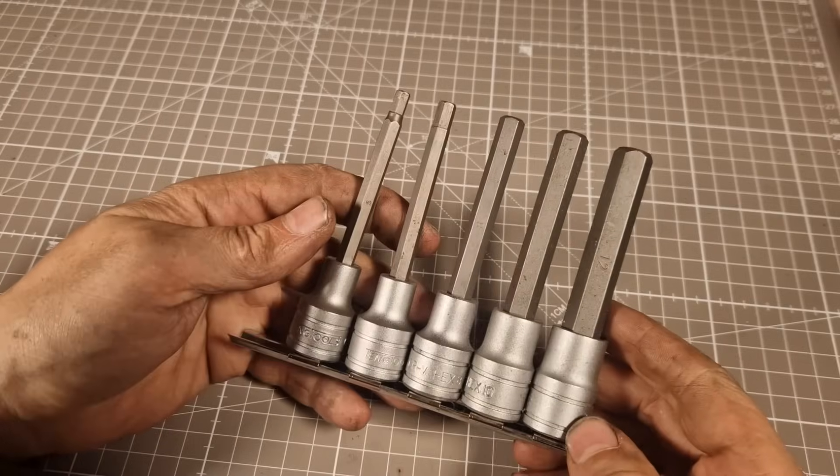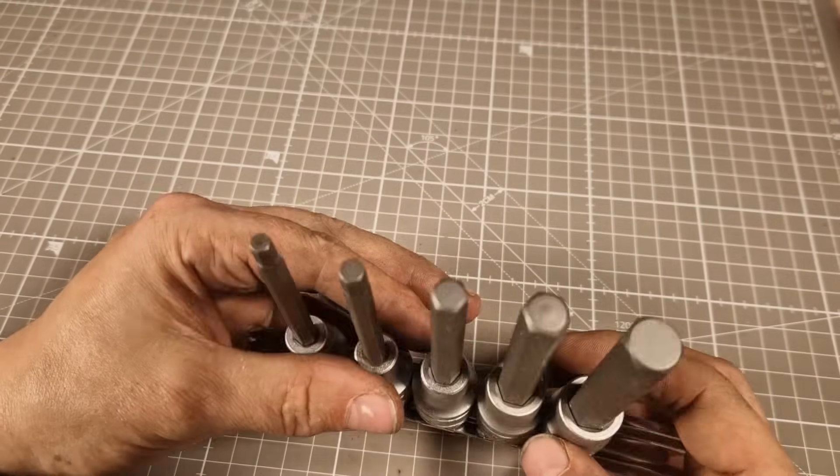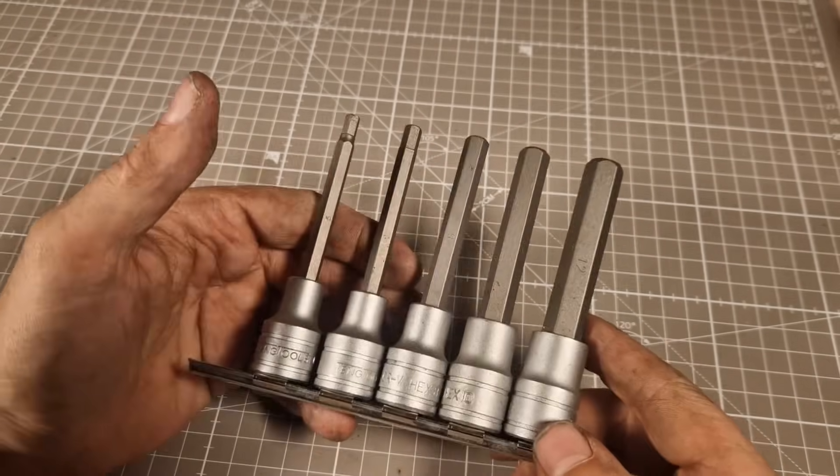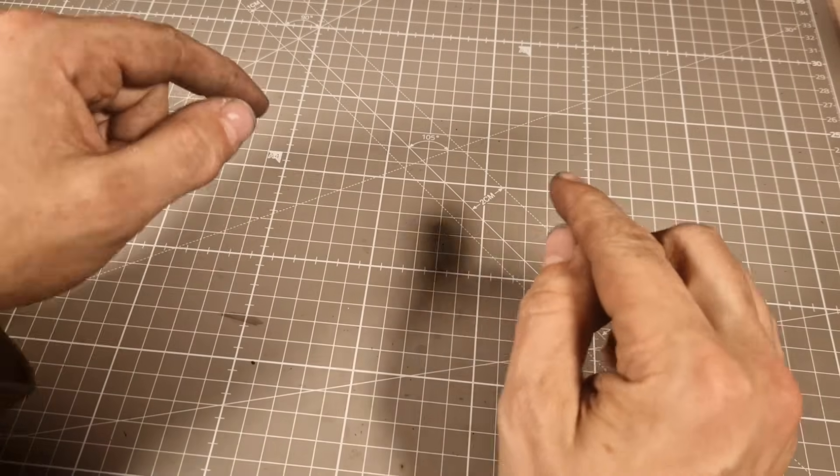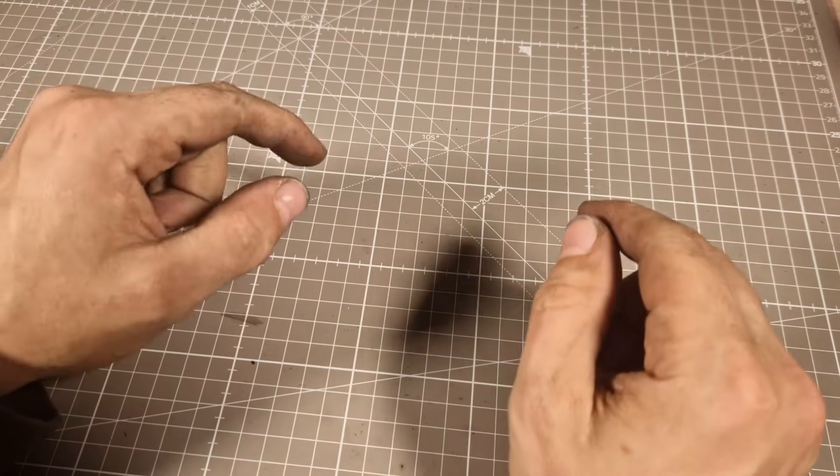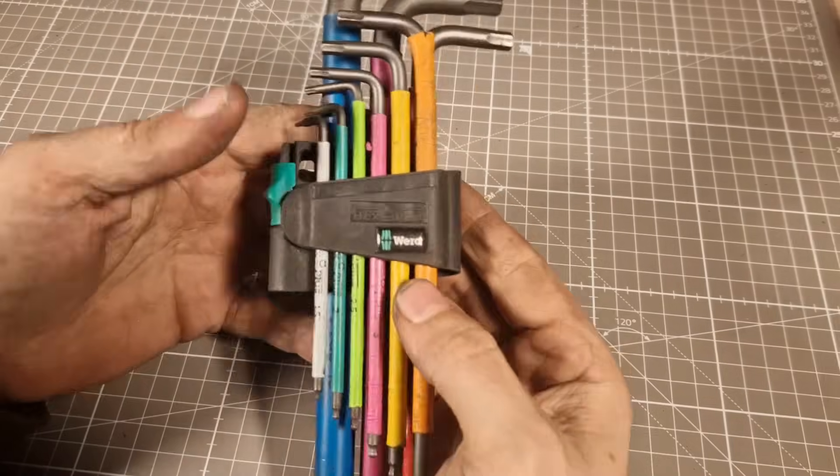I've also got some Teng Tool long reach ones. These are great, I don't think I've used the biggest ones but yeah these are quite good. Some of these fasteners, especially ones around the crank area, if they've got big hexes they don't want to budge, and these seem to just be fine with it.